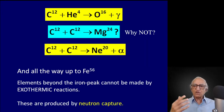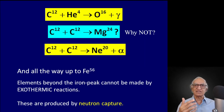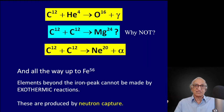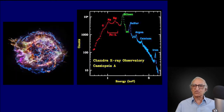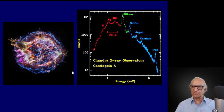How do you produce elements heavier than iron — platinum, uranium, bismuth, and so on? They are produced by what is called neutron capture. Here is the familiar Cassiopeia supernova remnant and the X-ray spectrum from Chandra.